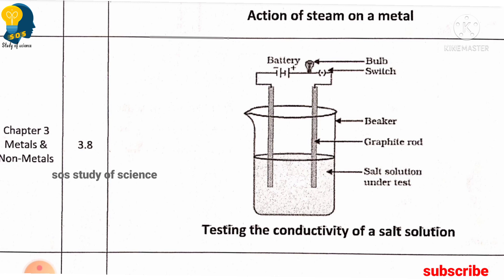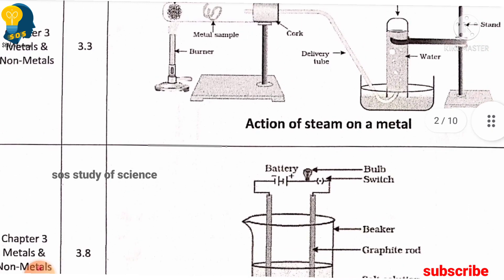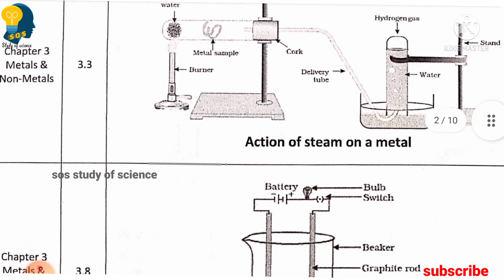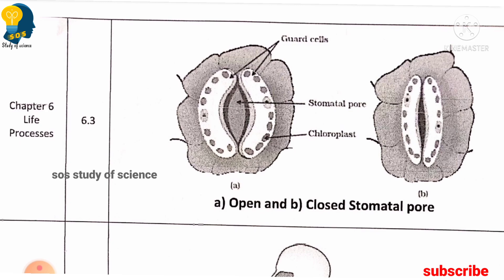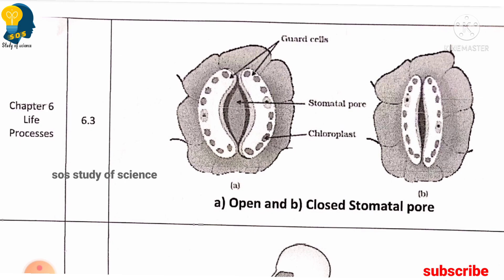Note that occurrence of metal is not included for this year, and there is no need to learn electrolytic refining of copper from this lesson. Only these two diagrams are important from metals and non-metals. Next, from the lesson life processes, you must learn open and closed stomatal pore.